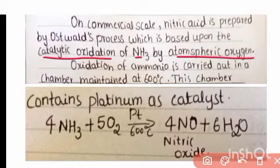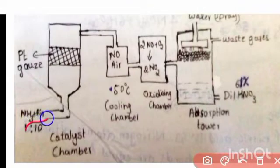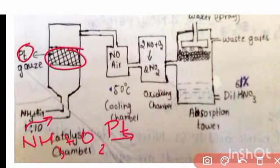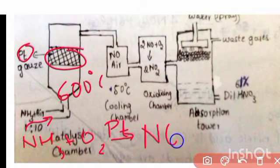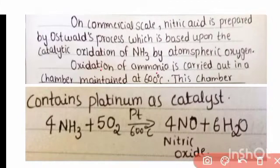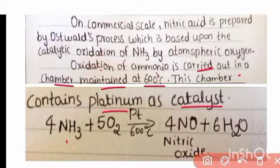In the first step, ammonia and oxygen are passed into a catalyst chamber. The chamber contains platinum gauze acting as a catalyst and is maintained at 600 degrees Celsius. Ammonia reacts with oxygen in the presence of platinum at 600°C to give nitric oxide (NO) and water.